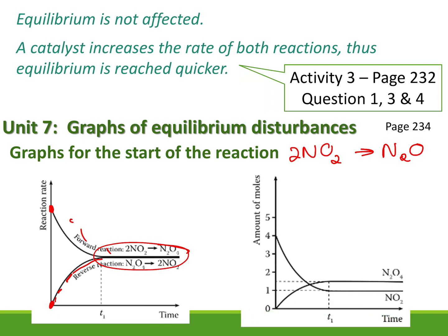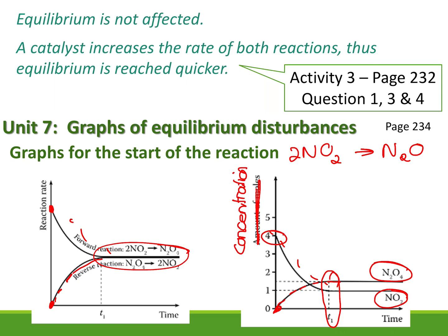When we look at concentration graphs, the N2O4 is the product and NO2 is the reactant. We started with no product and eventually get some; we started with lots of reactant and use it up. At t1, that's where we reached equilibrium — we know because the concentrations remain constant.